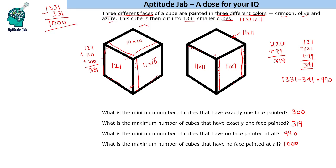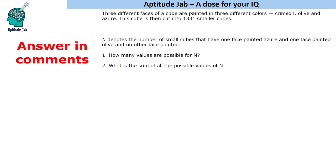So those are the answers to all four questions: minimum cubes with exactly one face painted is 300, maximum is 319, minimum cubes with no face painted is 990, and maximum is 1000. Now here is a bonus question: N denotes the number of small cubes that have one face painted azure and one face painted olive and no other face painted. How many values are possible for N, and what is the sum of all possible values of N? Try this and answer in the comments. I hope you loved solving this set — if you did, please like the video.